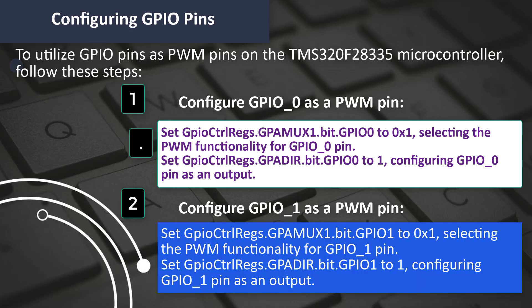Step 2: Configure GPIO_1 as a PWM pin. Set GpioCtrlRegs.GPAMUX1.bit.GPIO1 to 0x1, selecting the PWM functionality for the GPIO_1 pin. Set GpioCtrlRegs.GPADIR.bit.GPIO1 to 1, configuring GPIO_1 pin as an output.